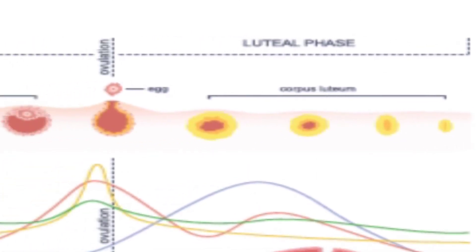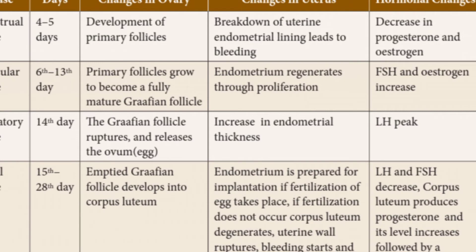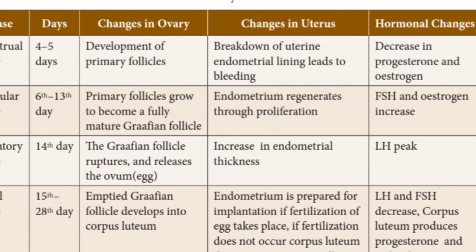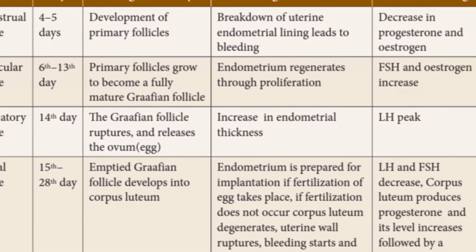The first phase is the menstrual phase, lasting 4 to 5 days. During this phase, primary follicles begin developing in the ovary. In the uterus, the breakdown of the uterine endometrial lining leads to bleeding. The hormonal change responsible is a decrease in estrogen and progesterone levels.